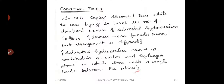The counting tree problem: a mathematician Cayley discovered trees while he was trying to count the number of structural isomers of saturated hydrocarbons. A hydrocarbon is a combination of hydrogen and carbon atoms. A saturated hydrocarbon means each carbon or hydrogen atom keeps a single bond or single link between the atoms.